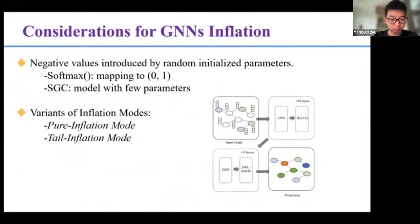Moreover, we need to make some changes on the basis of the MCL to make it suitable for graph neural networks. Due to the negative values introduced by random initialized parameters may affect the semantics of representations when computing powers, we propose to use the softmax to map it between 0 and 1. Or, we can use models with few parameters such as SGC, where no parameters are required during the message passing. And the softmax will make the propagation of gradients more difficult, especially when the number of layers is different. Therefore, we propose a hybrid model of pure inflation and non-linearity such as ReLU on the basis of the previous pure inflation mode.